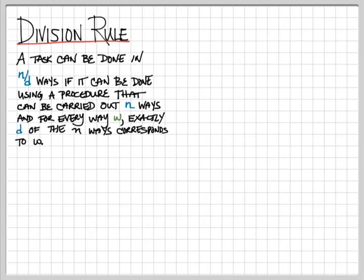One last rule, the division rule, because the partner to multiplication is division, so if we have a multiplication rule, we always ask, is there a division rule? And what this says is that if you have a task that can be done in n ways, but for every one of those ways, exactly d of them corresponds to the same way, then that task can be completed in n over d ways. I think that sounds a little confusing, and I like to call the division rule cow counting.